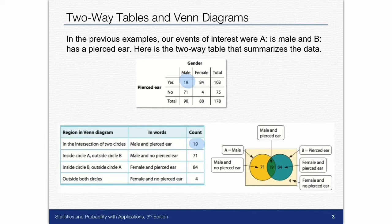Then inside circle A, but outside circle B, what's left in circle A is those that are male but not pierced ears, which is 71. So if you didn't know 71, you would take the total of all the males, which is 90, and subtract 19, and you would get 71.